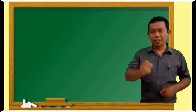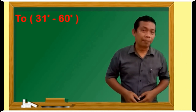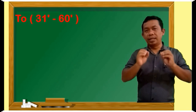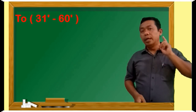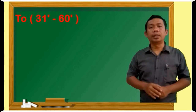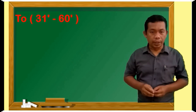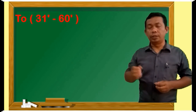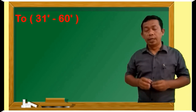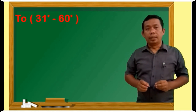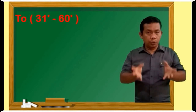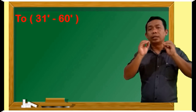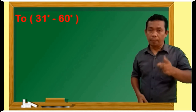Let's see the next part — about 'to'. Di awal tadi sudah diperkenalkan bahwa daerah dari 'to' itu dimulai dari menit ke-31 sampai dengan menit ke-60. Penggunaan 'to' dan 'past' itu sebetulnya hampir sama. Perbedaannya adalah, kalau di 'to', menit dan jam yang kita sebutkan itu bukan angka yang tertulis pada jam.